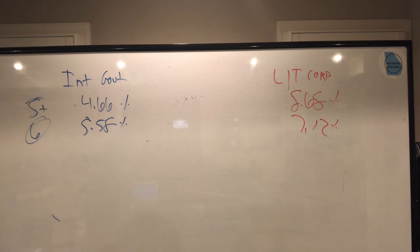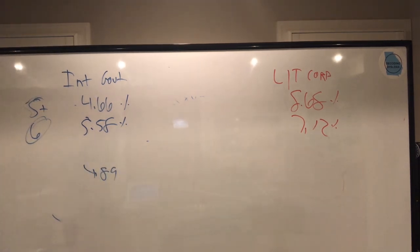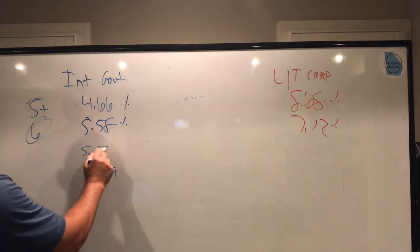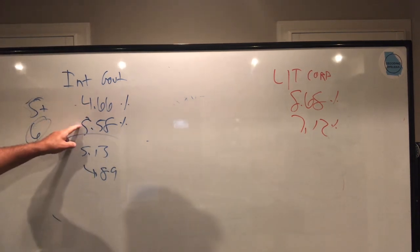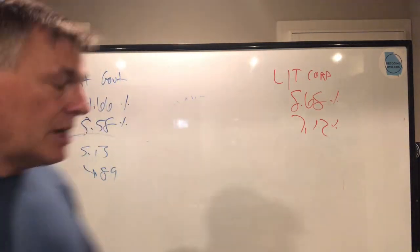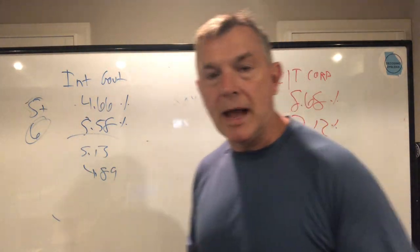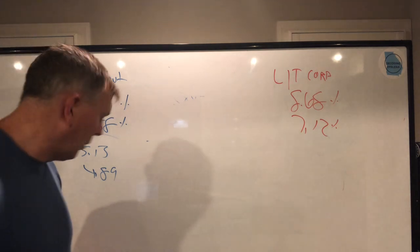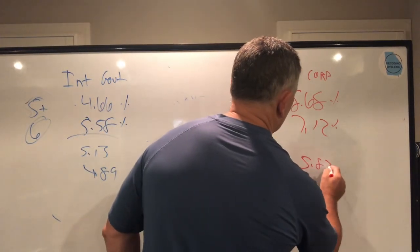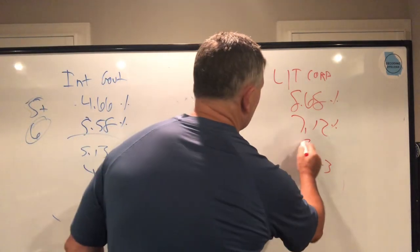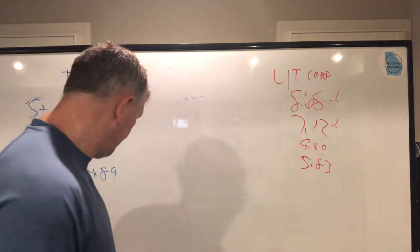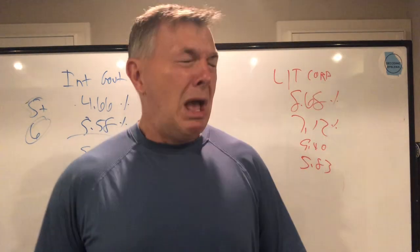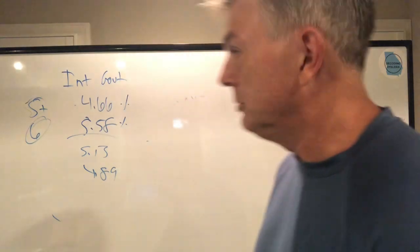At the end of 2023, the compounded annual growth rate for the intermediate government bond fund went from 5.58% down to 4.89%, and the standard deviation went up to 5.13% — now higher than the average rate of return. The long-term corporate fund fell to a 5.83% average rate of return, and the standard deviation went up to 9.4%.